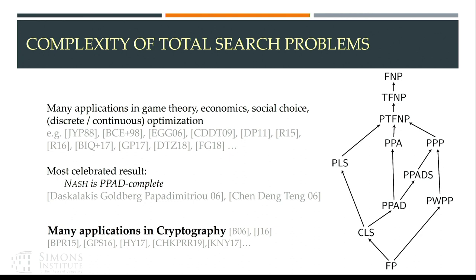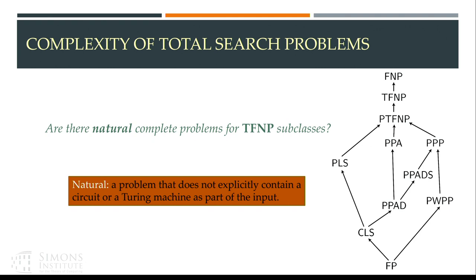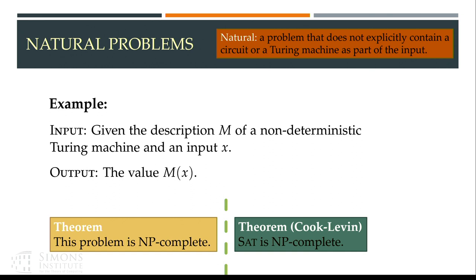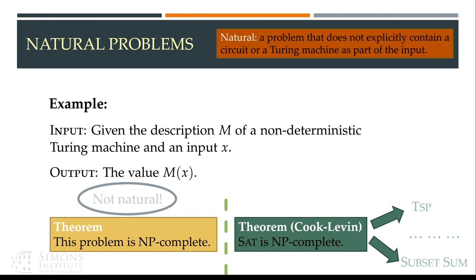Our first question for these subclasses is whether we can find natural complete problems for them. Here, 'natural' means that a problem does not contain a Turing machine or a circuit as part of the input. For example, a problem where you're given a non-deterministic Turing machine and input x is non-natural, whereas SAT is natural. The Cook-Levin theorem shows SAT is NP-complete, and from SAT we can find many other NP-complete problems.